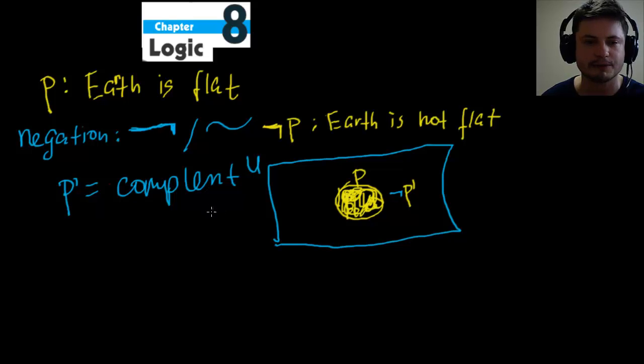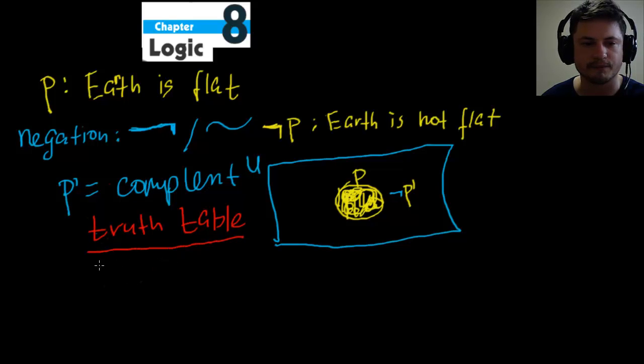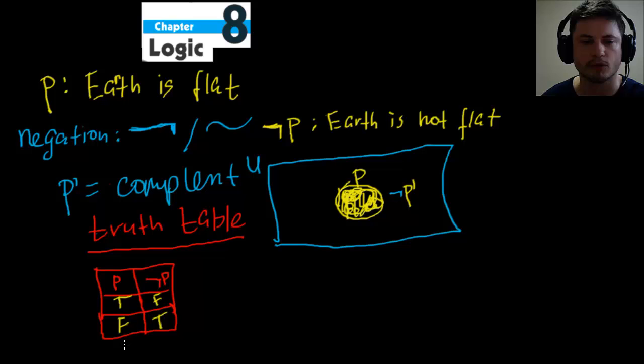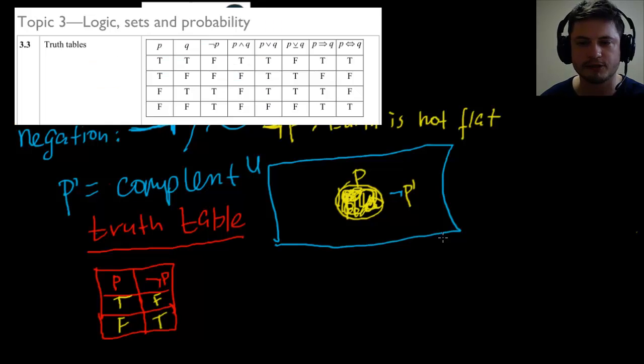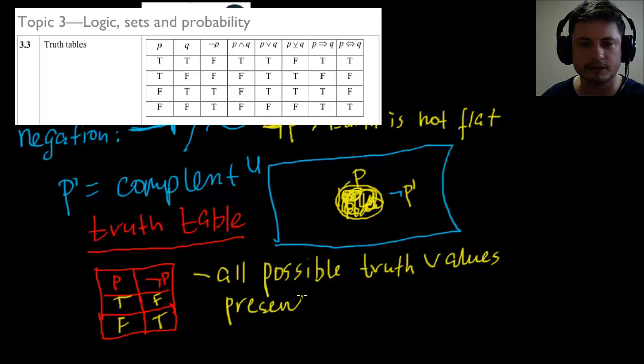However, in logic, instead of using Venn diagrams, we often use tables. And these are called truth tables. Truth table, which is actually something you will have on your formula sheet as well. Truth table is a table that kind of looks like this where you often have P and not P on top. And then you'll have all values that are possible for each of these propositions. So it's either true or false. And this can be either false or true. So if one is true, then the other one is false. And if one is false, then the other one must be true. Truth tables are essentially all possible truth values that are presented in a table format.